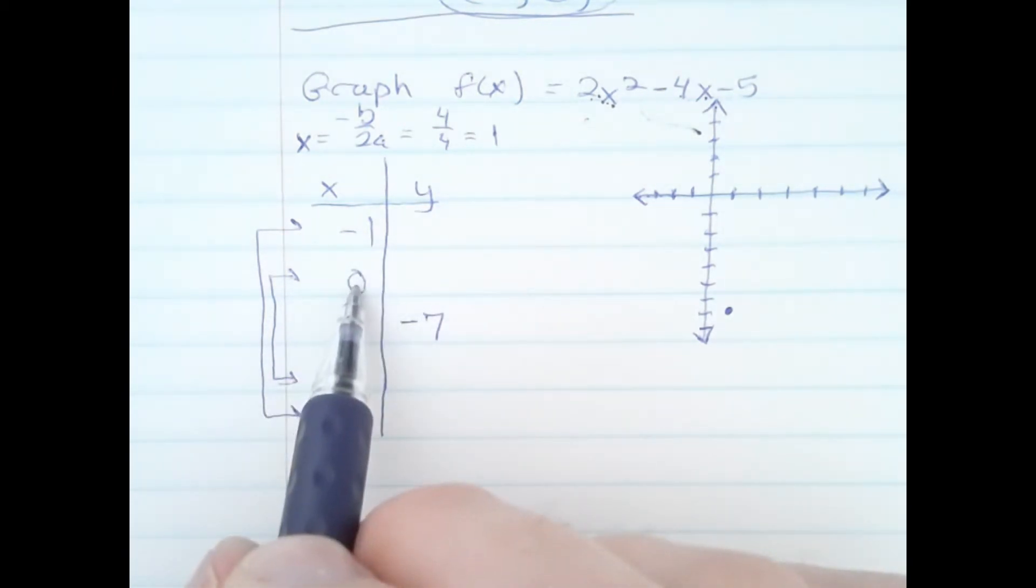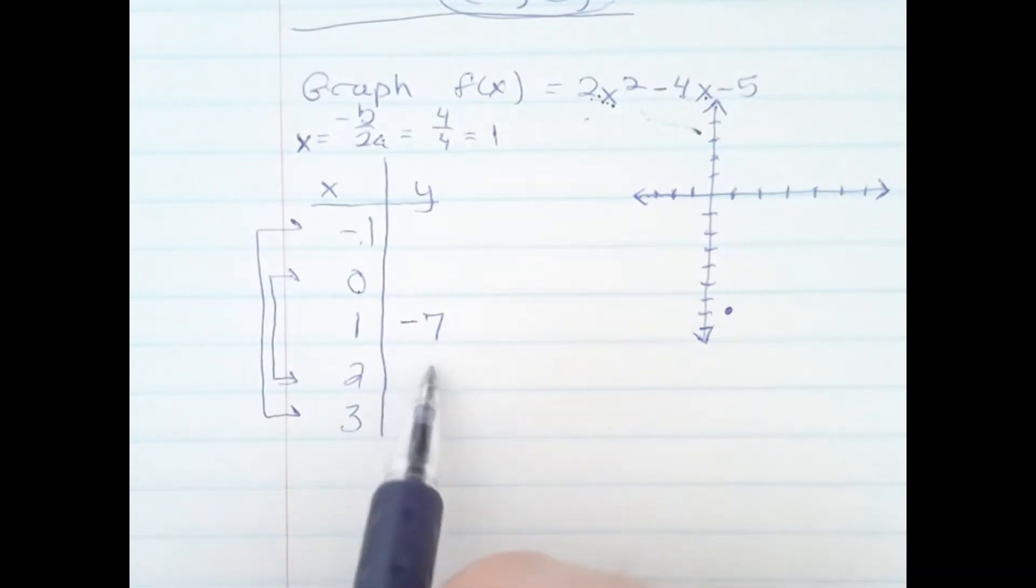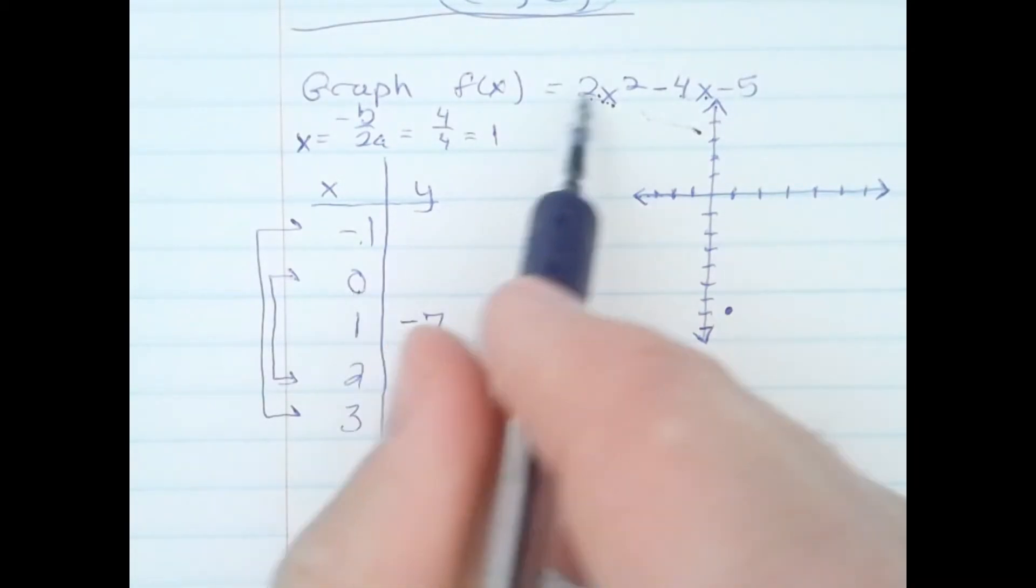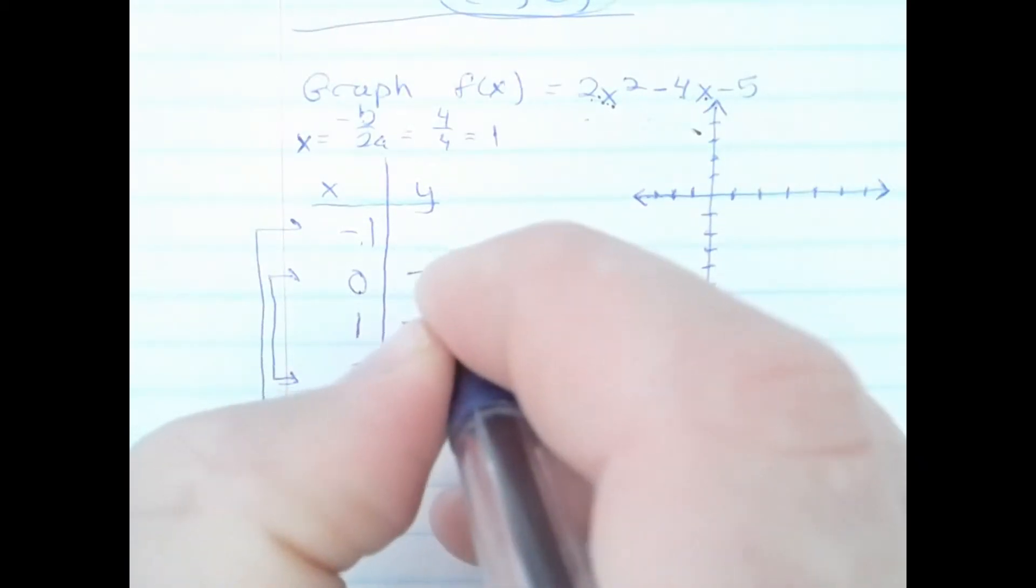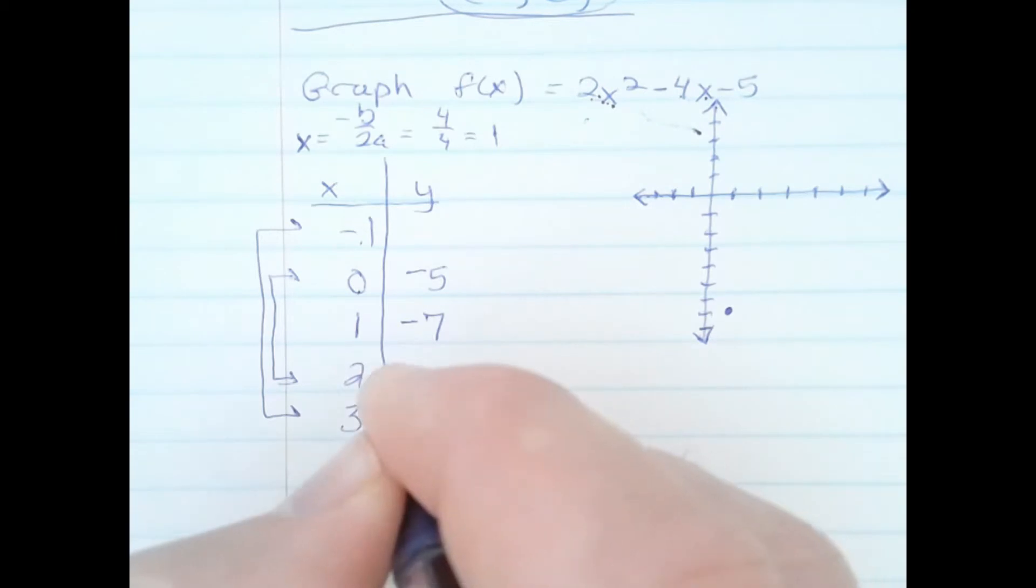All I need to do is compute the y-values for 0 and -1, and then they will equal the y-values for 2 and 3. When I plug 0 in for x, I get -5. By symmetry, 2 in for x will give me -5. You can check this algebraically if you want.